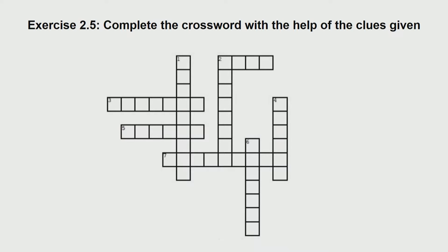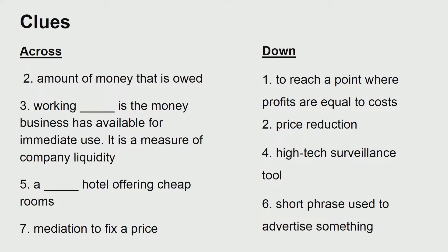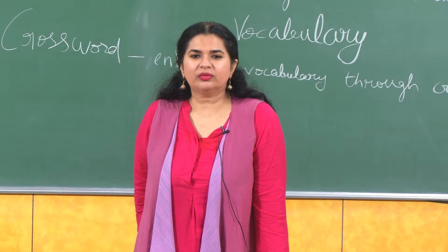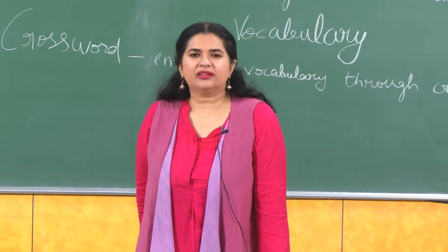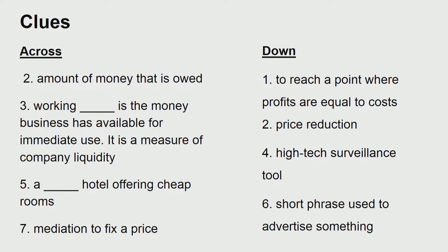You can download this crossword slide. The words we are going to work with are related to finance and marketing. This is the template, and these are the clues across and down. Across means sideways; down means top to bottom. Clues across: amount of money used — working dash; money business dash; hotel offering cheap rooms; mediations to fix a price. Remember the numbers — this is the way crosswords work. Clues down: to reach a point where profits equal cost; price reduction; high-tech surveillance tool; short phrase used to advertise something.